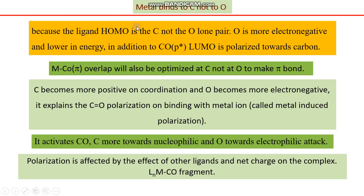Last time we were discussing the polarization induced by metal and carbon monoxide. We discussed how polarization is induced in carbon monoxide by a metal center, covering two types of metal: electron rich and electron deficient. We came to know how each affects the polarization or reactivity of carbon monoxide when attached to a metal center — in some cases carbon was exposed to electrophilic attack, in others to nucleophilic attack.